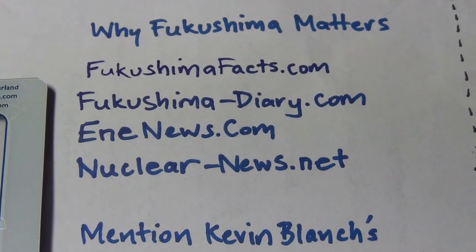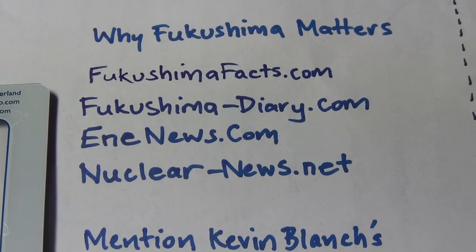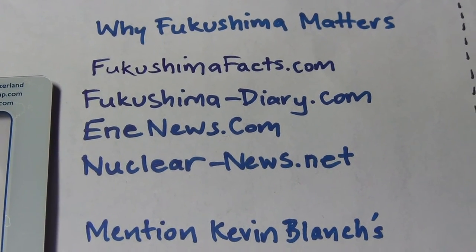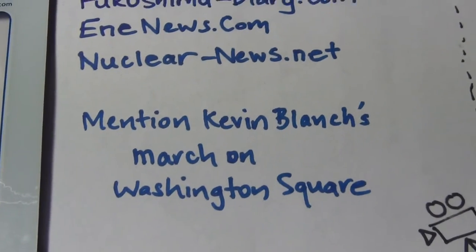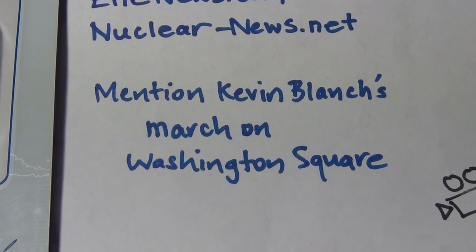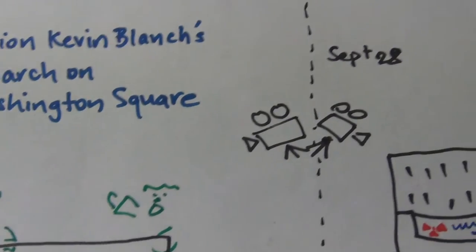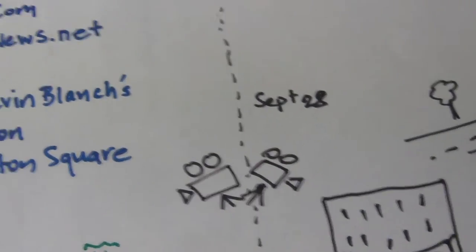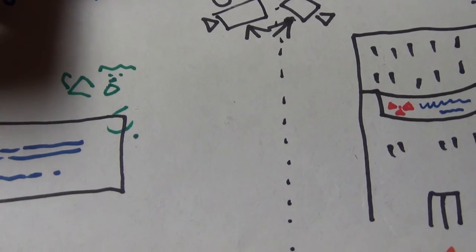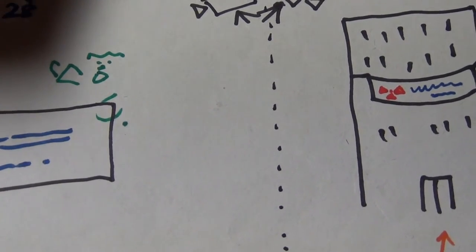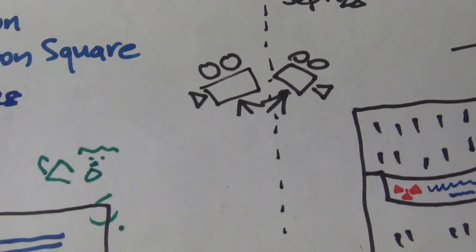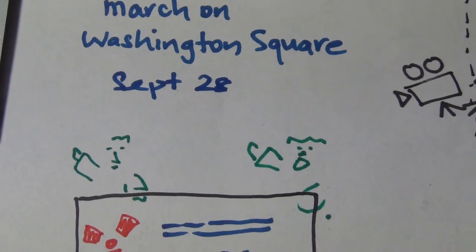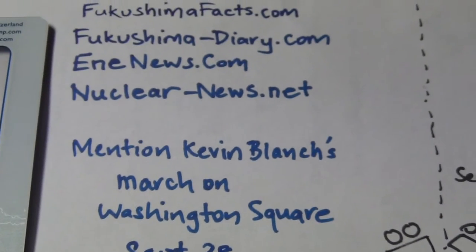FukushimaFacts.com, Fukushima Diary, any news, nuclearnews.net, and it must also mention Kevin Blanche's march on Washington Square, which I forgot to write is September 28th. So it must mention those things.